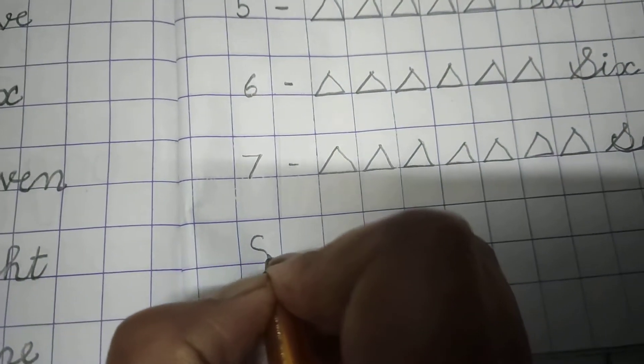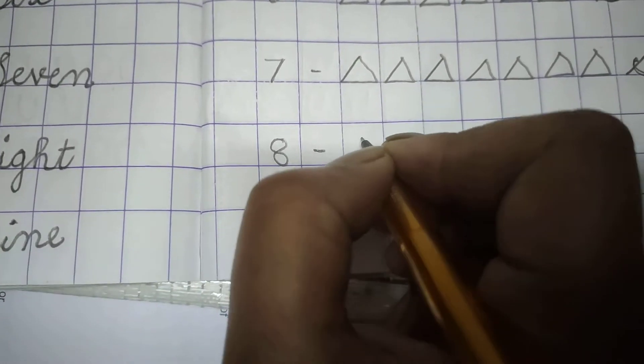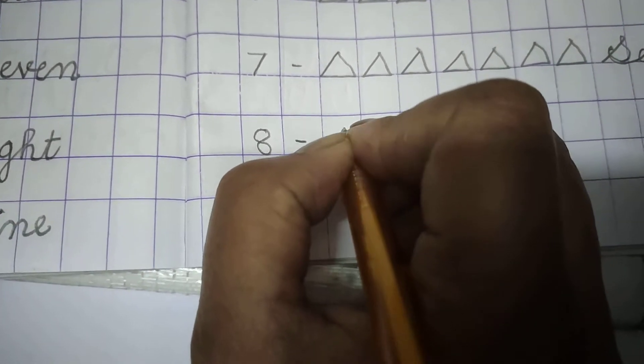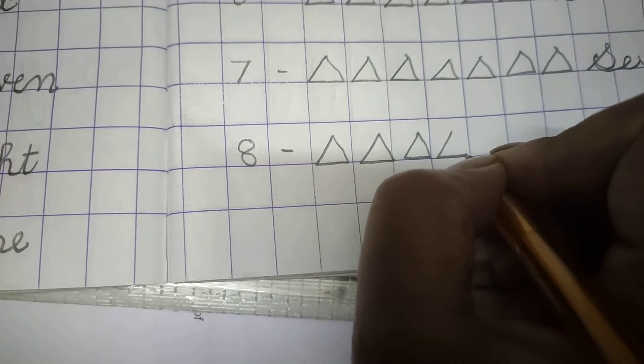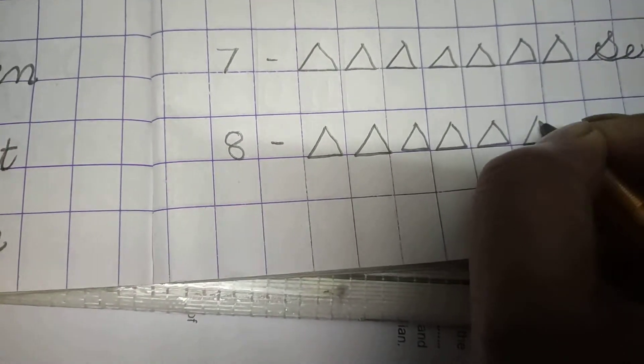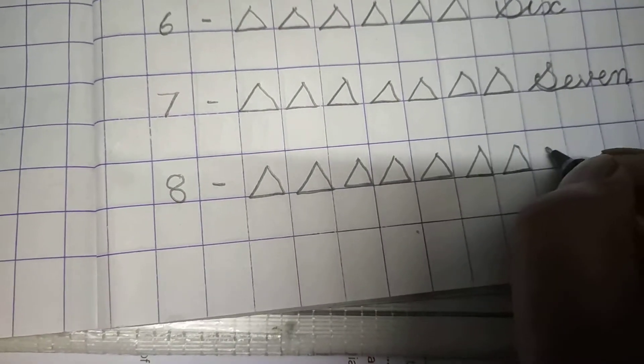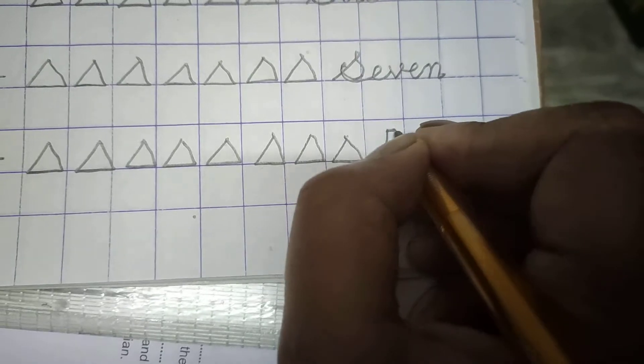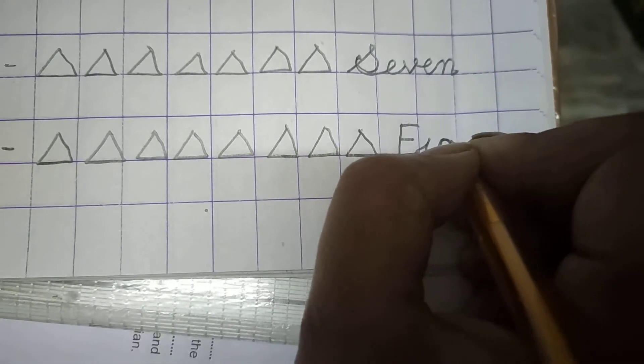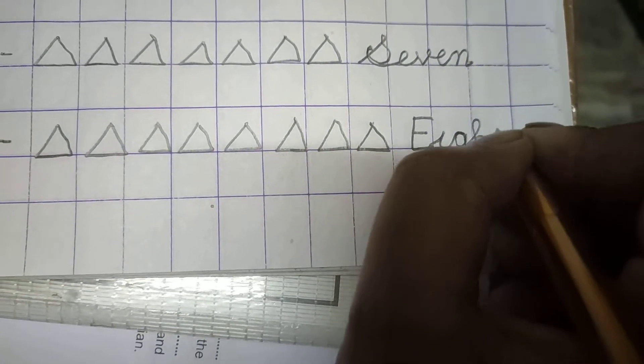8. 8. 8 triangles we will draw. 1, 2, 3, 4, 5, 6, 7, 8. Now write down 8: E-I-G-H-T.